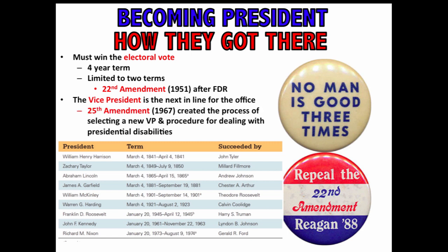The 25th Amendment in 1967 created the process of selecting a new vice president and the procedure for dealing with presidential disabilities. If there is a vacancy in the vice presidency, the president can pick someone who would then be approved by a simple majority vote in both houses of Congress. The 25th Amendment also stipulates that the vice president becomes acting president if the president is temporarily disabled or unable to do the job due to health or other issues.